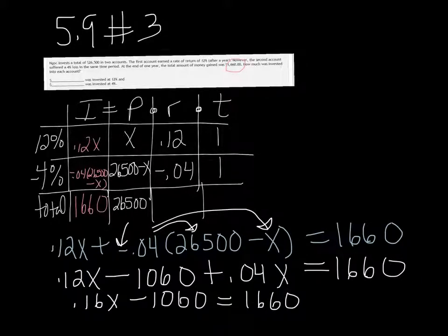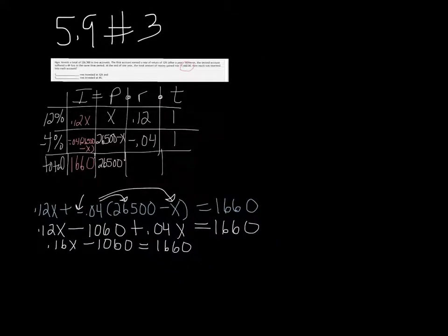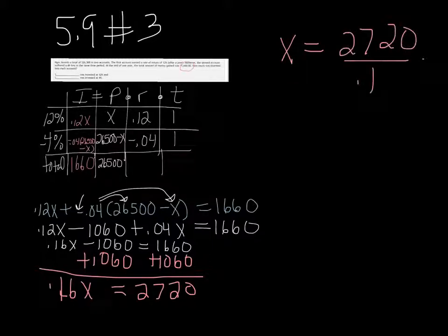We want to add the 1060 on both sides because we're trying to get X by itself. So we get 0.16X equals 2720, and then finally we want to divide both sides by 0.16, and that gives us 17,000 even.